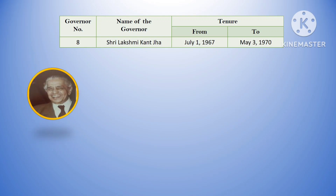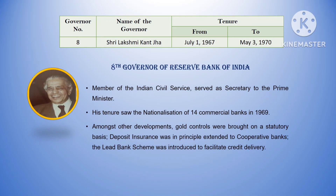The eighth governor was Sri Lakshmi Kant Jha. His tenure was from July 1, 1967 to May 3, 1970. He was a member of the Indian Civil Service and served as secretary to the Prime Minister. During his tenure, 14 commercial banks were nationalized in 1969. Gold controls were brought on a statutory basis, deposit insurance was in principle extended to cooperative banks in 1968, and the Lead Bank Scheme was also introduced to facilitate credit delivery.